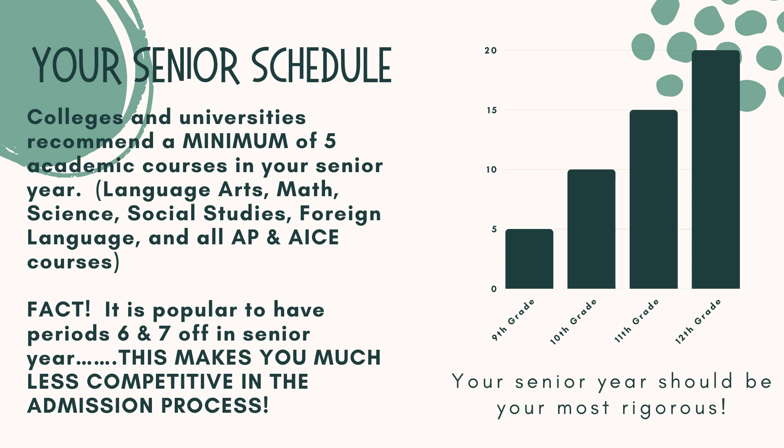Something else to think about as you review your course requests is the strength of your senior schedule. Approximately 93% of Park Vista students pursue a post-secondary education, whether at a four-year, two-year, or vocational school. Colleges and universities recommend a minimum of at least five academic courses in your senior year. Academic areas are language arts, math, science, social studies, foreign language, and all AP and ACE courses. If you have any periods off in your junior or senior year, you are less competitive in the college application and scholarship process. So while it is popular to have periods 6th and 7th off in senior year, this might not be the best decision for your post-secondary goals.